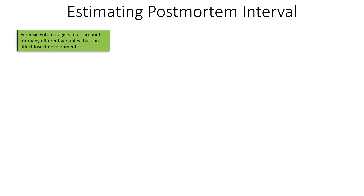Forensic entomologists must account for many different variables or environmental conditions that affect insect development greatly. Two of those variables would be local temperatures — meaning the temperatures at the scene where the body was found — and environmental conditions. What are those environmental conditions? Things like: is it wet? Has it rained or precipitated? Has it frozen or frosted? Is it dry? Is it humid? Is it hot or cold?